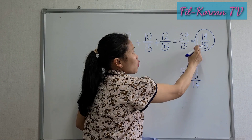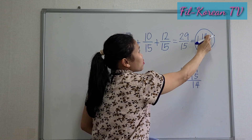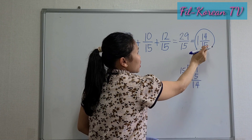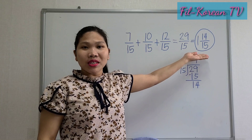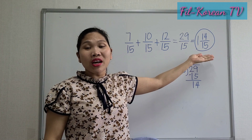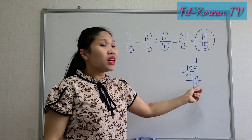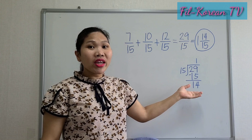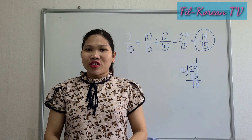Remember: the quotient is the whole number, the remainder is the numerator, and the divisor is the denominator. This is the proper arrangement of the numbers when we simplify an improper fraction.